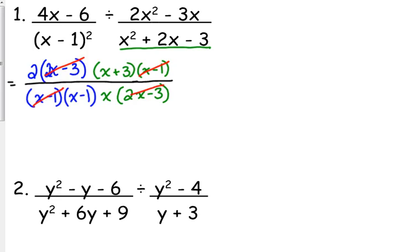So 2x minus 3, we also have that in common, numerator and denominator. But then that's it. So final answer: 2 times x plus 3 over x times x minus 1.